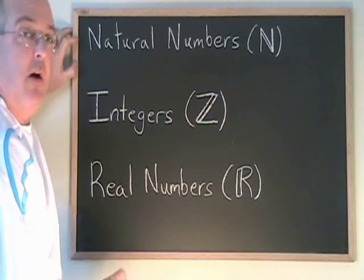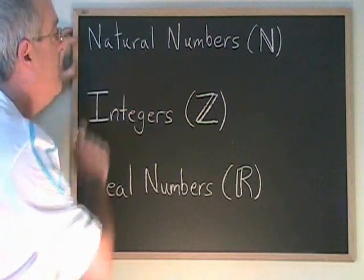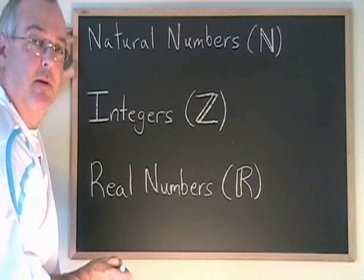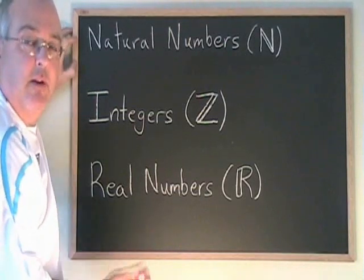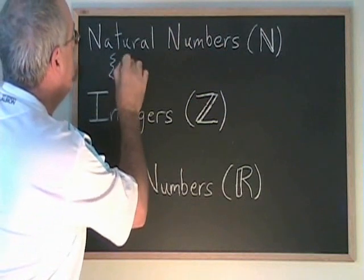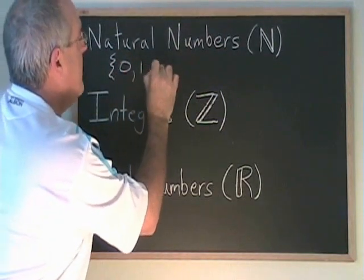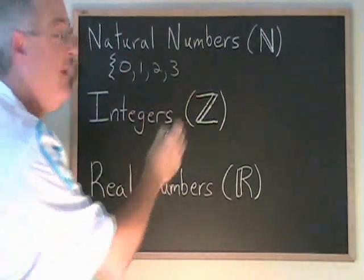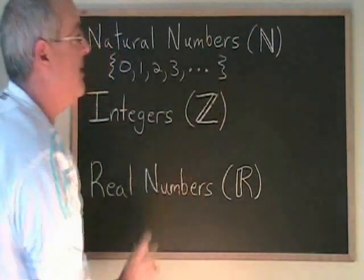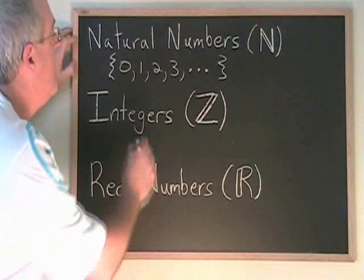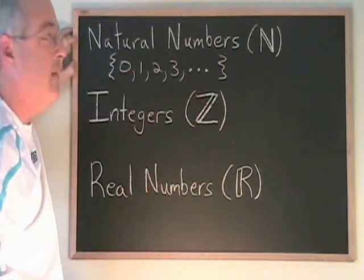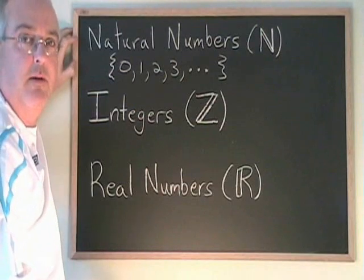The three most common universes are the natural numbers, the integers, and the real numbers. Natural numbers are the numbers that small children learn to work with in math first. They include 0, 1, 2, 3, and they continue going on forever in the positive direction. There are no fractions or decimals included, and they can also be described as the positive whole numbers and 0.